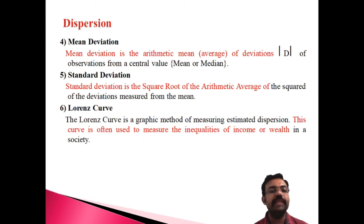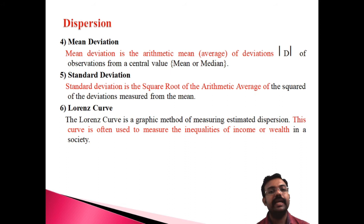The fourth measure is mean deviation. Mean deviation is the arithmetic mean of the deviations of observations from a central tendency value (mean or median). It is represented as the average of |X − X̄|. Mean deviation measures how far each observation deviates from the center value on average.